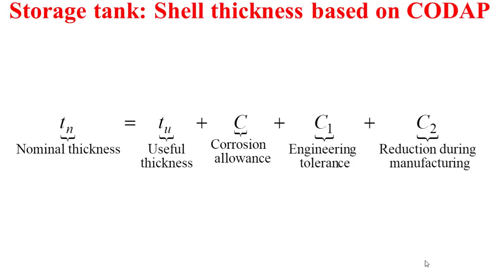The shell thickness of a cylindrical shell in a storage tank is given by the formula in this slide, based on the calculation code CODAP. The nominal thickness of the cylindrical shell must be equal to a certain useful thickness, plus a certain corrosion allowance, plus an engineering tolerance, plus a certain reduction during manufacturing.